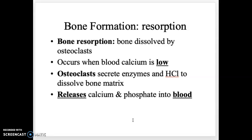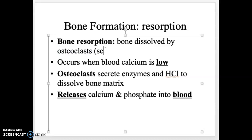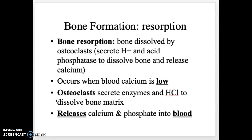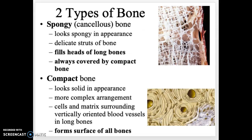Bone is also resorbed when blood calcium is low. When the body needs calcium, osteoclasts secrete hydrogen ions and acid phosphatase — forming hydrochloric acid — to dissolve the bone. This releases calcium and phosphate into the blood to be used primarily by the nervous and muscular systems.